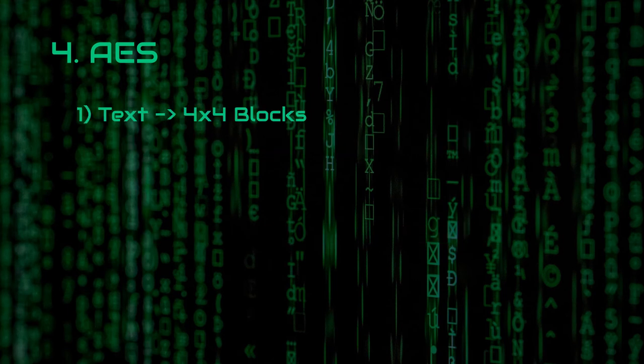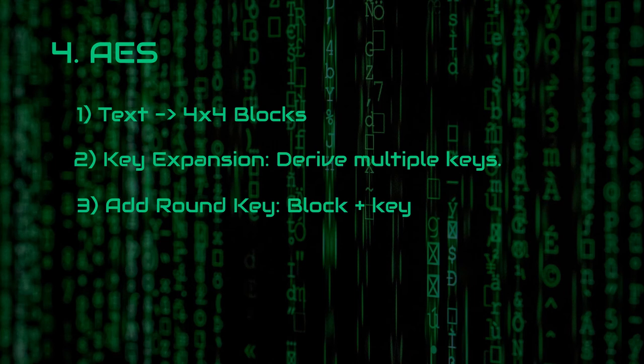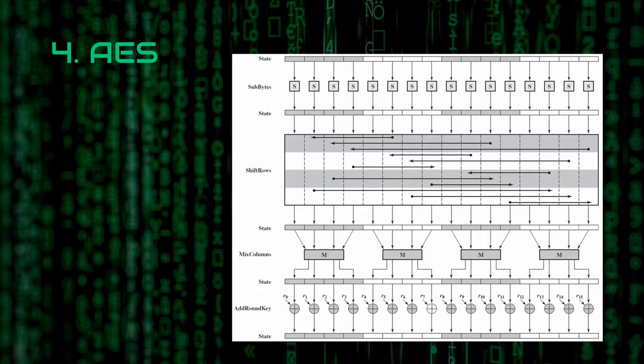First, we start by separating our text into 4x4 blocks. Second, we derive multiple keys from our initial key according to Rijndael's key schedule — this process is called key expansion. Then, we combine our initial key with our block containing the message fragment via XOR cipher; this step is called adding the round key. After that, things get a bit more operational: we first substitute bytes from a lookup table, then we shift rows, mix columns, and start to add our derived round keys. We repeat those operations multiple times according to the key we have chosen initially.